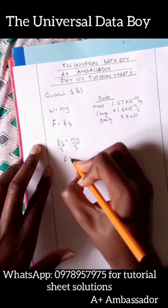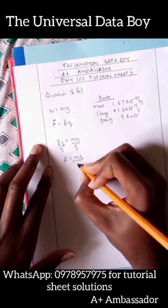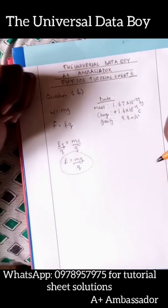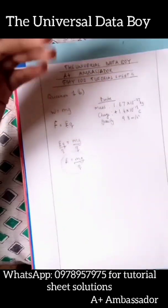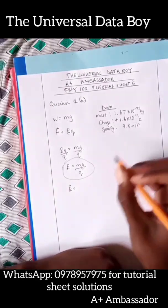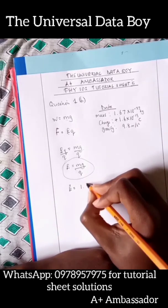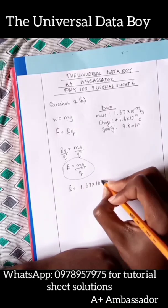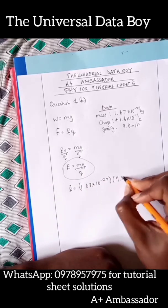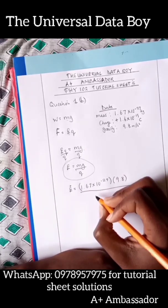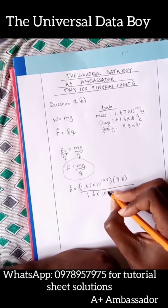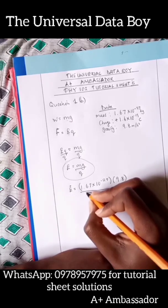Then we're having E being equal to mg over q. Now this is a symbolic answer and from here all we have to do is plug in the values and then calculate to give us the answer. So now we have the electric field E being equal to the mass which is 1.67 times 10 to the power negative 27 times 9.8 over the charge which is 1.6 times 10 to the power negative 19 coulombs.